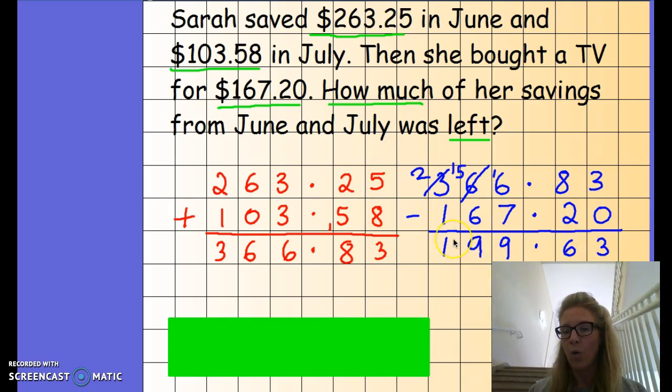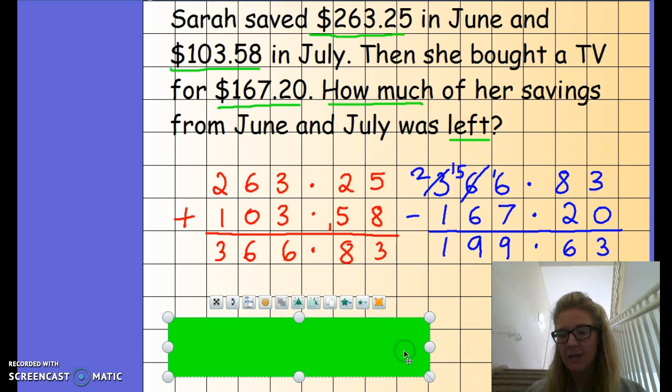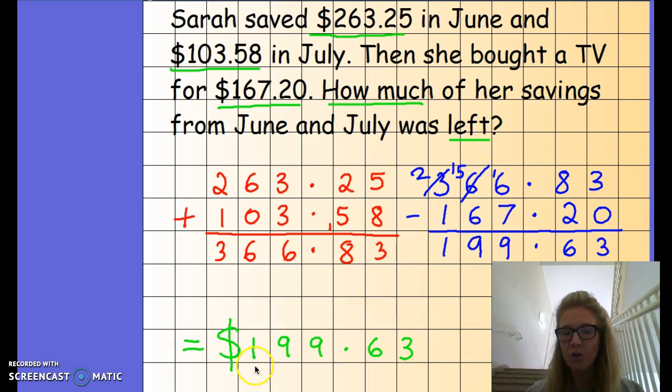For us to then find out how much of the savings Sarah had left, which is $199.63. And we would clearly mark in our homework book the two methods we have used to solve the problem and the answer, okay?